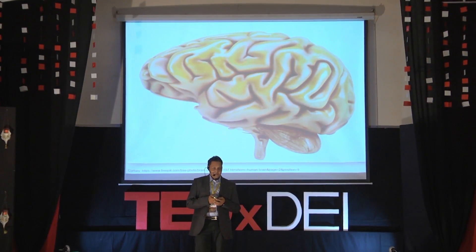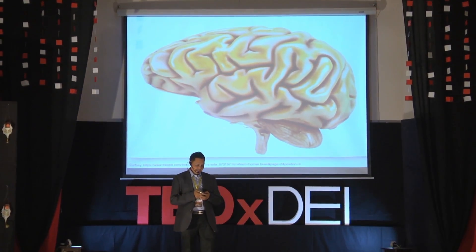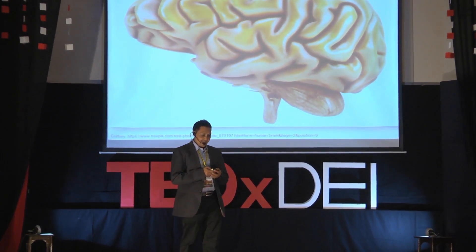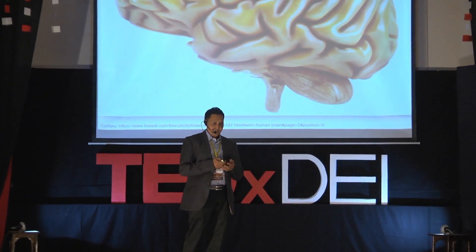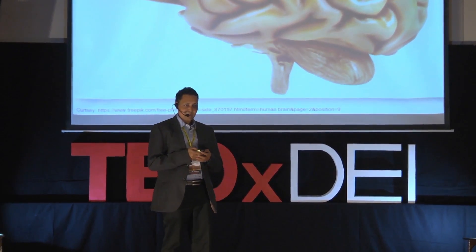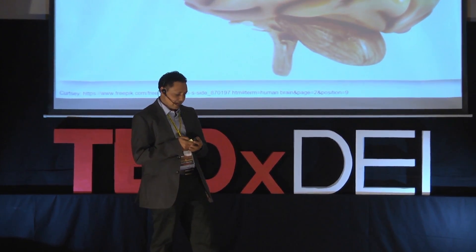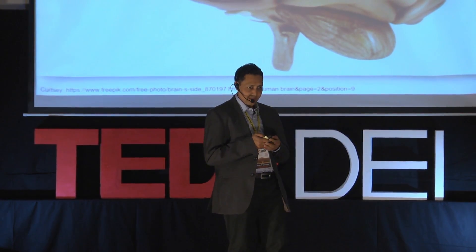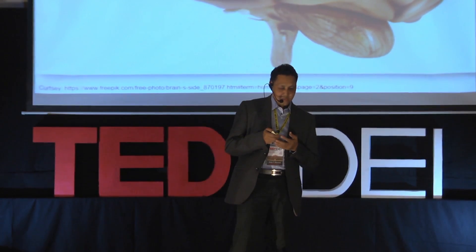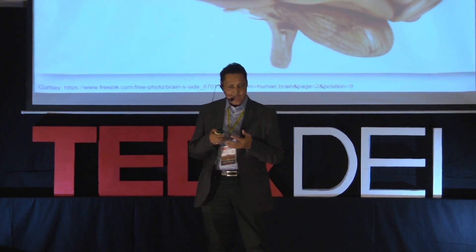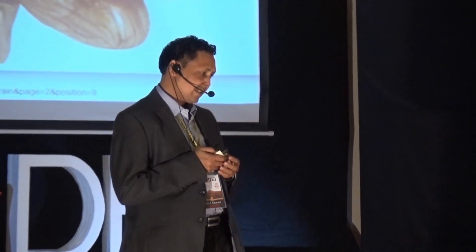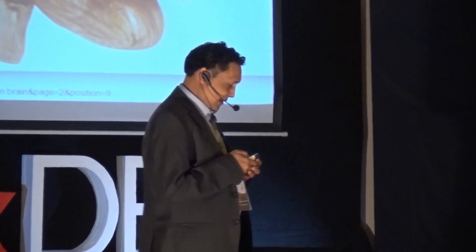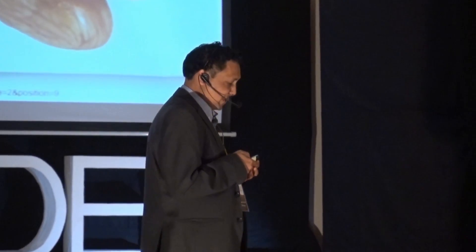Just like me, many of you would be wondering since childhood what the brain is and what its faculties like memory are — how memory takes shape, how it looks, where it distorts, and how we can retrieve information. I was also perplexed with this question until now.